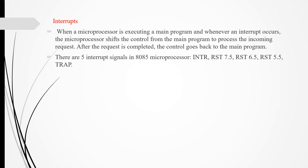When a microprocessor is executing a main program and an interrupt occurs, the microprocessor shifts control from the main program to process the incoming request. After the request is completed, control goes back to the main program. There are 5 interrupt signals in the 8085 microprocessor: INTR, RST 7.5, RST 6.5, RST 5.5, and TRAP.